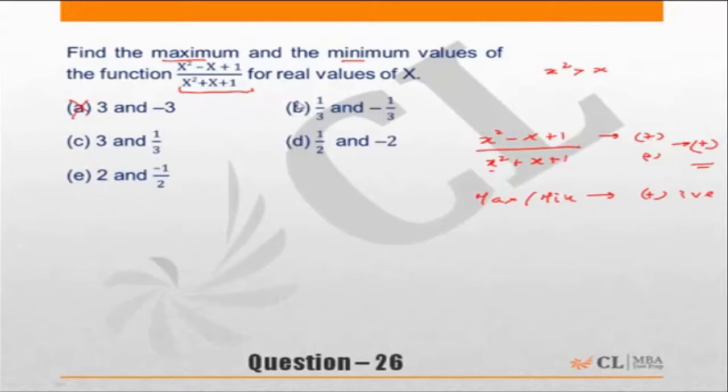Hence choice A and choice B are incorrect because they are giving me negative values. Similarly choice C is incorrect because it is giving me a negative value. Choice E is also incorrect. Correct answer choice C.